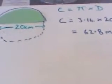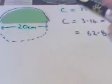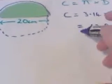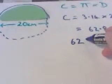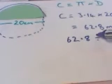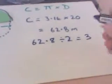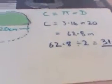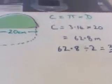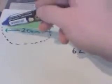So if we get that divided by 2, we get 31.4 meters. And that's where most people stop. Unfortunately, that's only the curved edge.